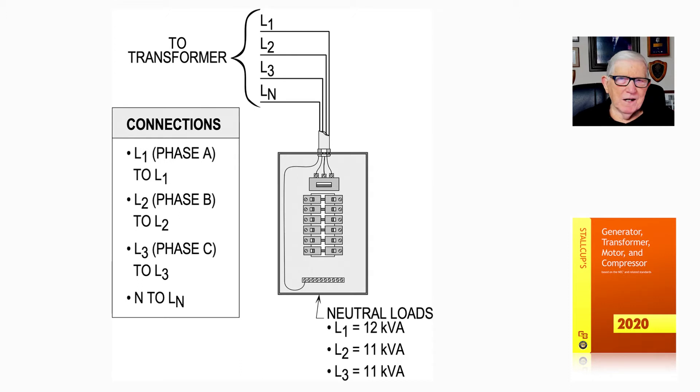When we look at the connections now, L1 is phase A, connects to the phase A winding to L1, and the same L2 to phase B and L2, L3 to phase C to L3, and then of course the neutral line is connected to the zero point of the Y system.